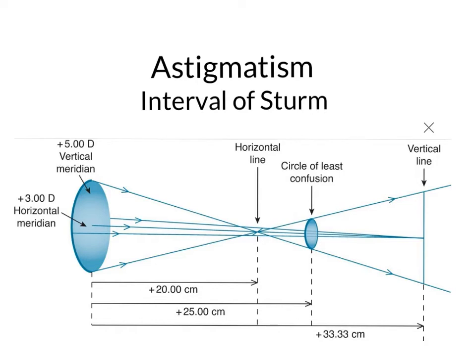I have here a lens with astigmatism. The vertical meridian, which goes up and down — let me outline that here. The vertical meridian in red has a different power than the horizontal meridian that I would draw in blue. You've seen this many times before in my videos.